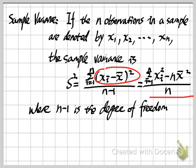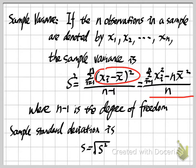The next terminology is sample standard deviation. The idea is similar: the standard deviation is always the square root of the variance. So the sample standard deviation s equals the square root of s squared. The meaning is to describe the spread of our observations for our sample.